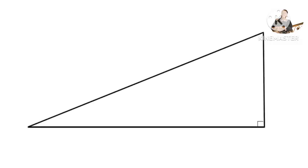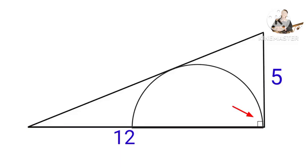We have a right-angled triangle with sides 5 units and 12 units. Inside the triangle, there is a semicircle placed so that the straight edge of the semicircle is at one vertex of the triangle.